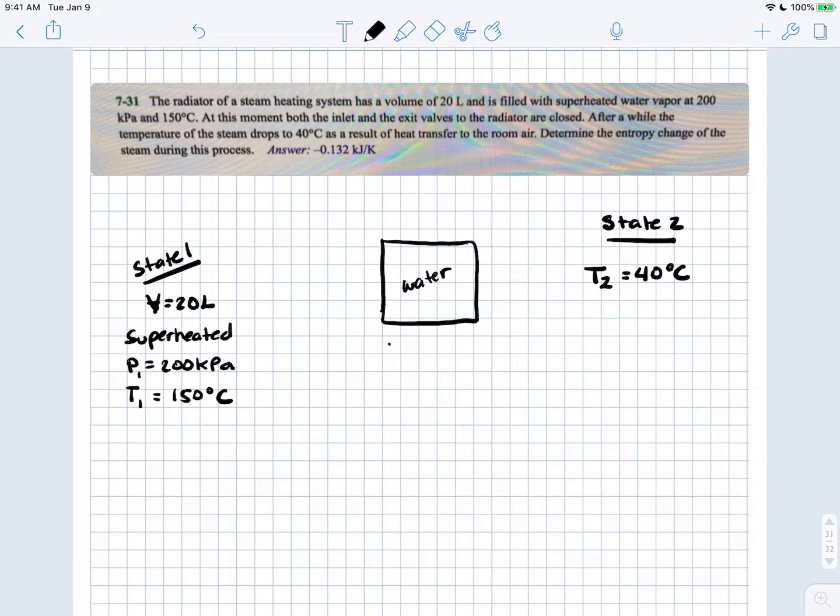We're assuming this is a closed system, so we don't have mass crossing our system boundary. We're asked to find the entropy change of the steam during this process, so we need to find delta S.